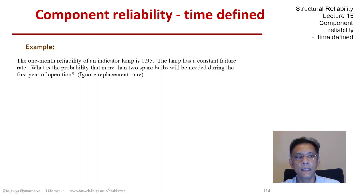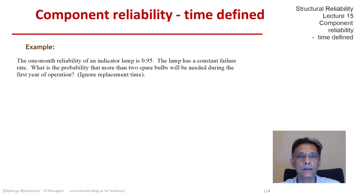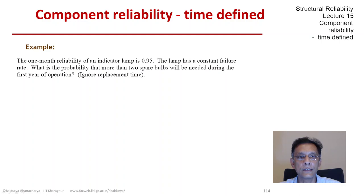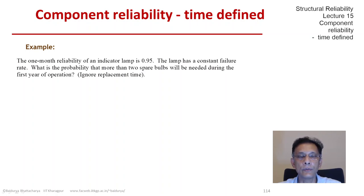The key point to note here is the phrase 'constant failure rate.' This actually indicates that the process occurs according to a Poisson process with a constant rate. That constant rate is lambda, and the time to failure is distributed according to an exponential random variable.